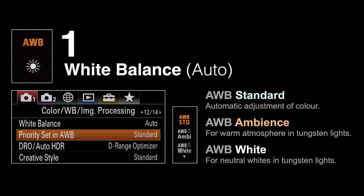Let's look at white balance first. Most photographers shoot in auto white balance. There are some ways of fine-tuning that auto white balance — it isn't just a set-and-forget setting anymore, especially on the latest cameras. For instance, on my latest Sony cameras released in 2019 and afterwards, they have three options for auto white balance: standard, ambience, and white.